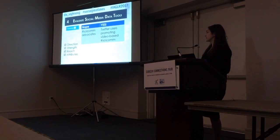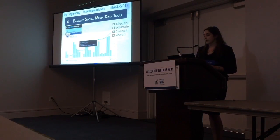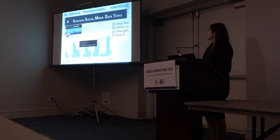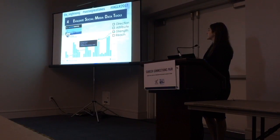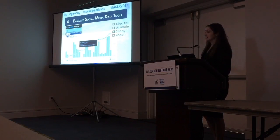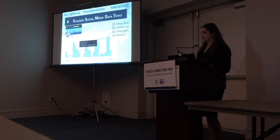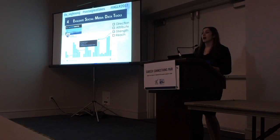Now I'm going to show you an example of a tool that does not fulfill all four criteria. Twitter Counter seems like a nice graph — it's plotting number of tweets per day from the IJC's Twitter account and the total number of followers. On this particular day, it says we tweeted 13 times and gained six followers. But it doesn't give us directionality, strength, reach, or attributes — and it abstracts the data from the context.